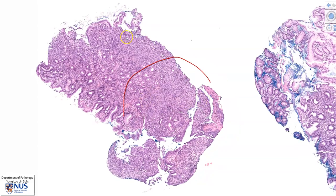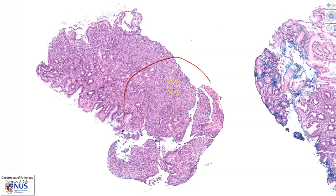Going back to low magnification, these are the normal benign gastric glands. In some areas, such as this area that I am outlining here, there appears to be a disruption of these glands. We can see them again here, but not in this area — this is where the tumor is.